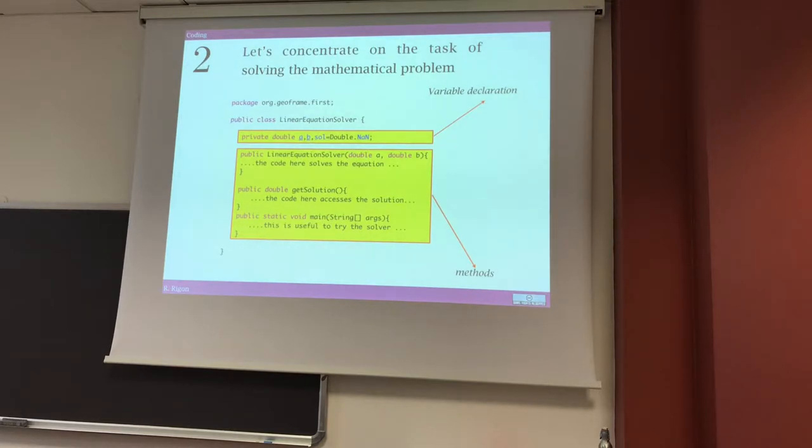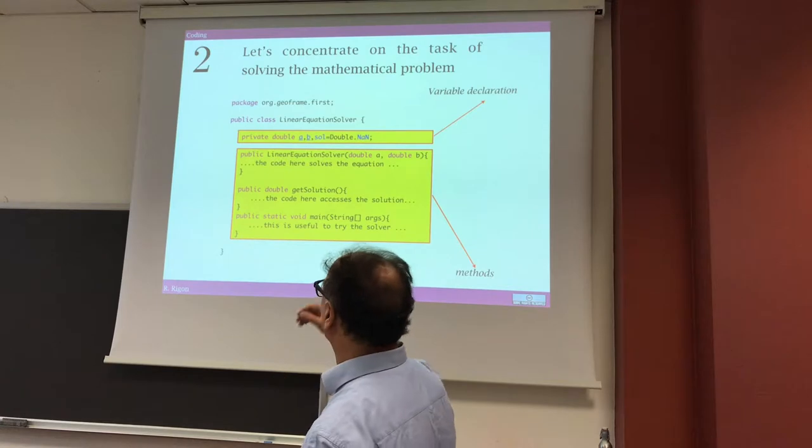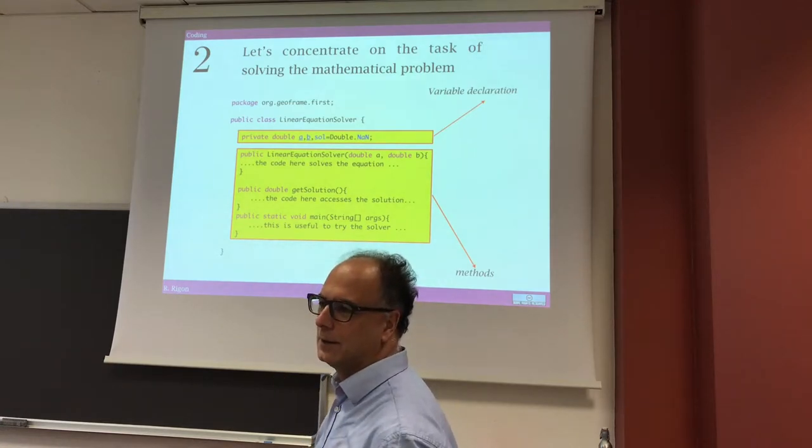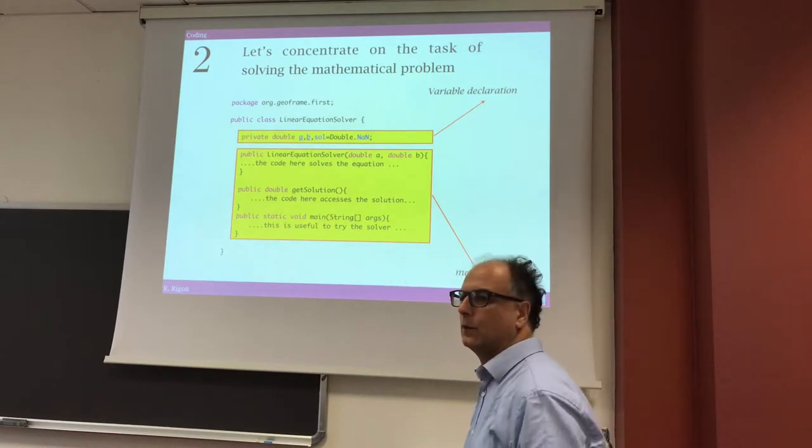Here, actually, I betrayed my assertion that I did before. One class, one responsibility. Because, actually, here, I construct the object, the new class, with this constructor. But, also, I go to execute the code. That is because the thing is particularly simple. So, I didn't need a further method to solve the class. But here, I do, actually, with the constructor, I do two operations.